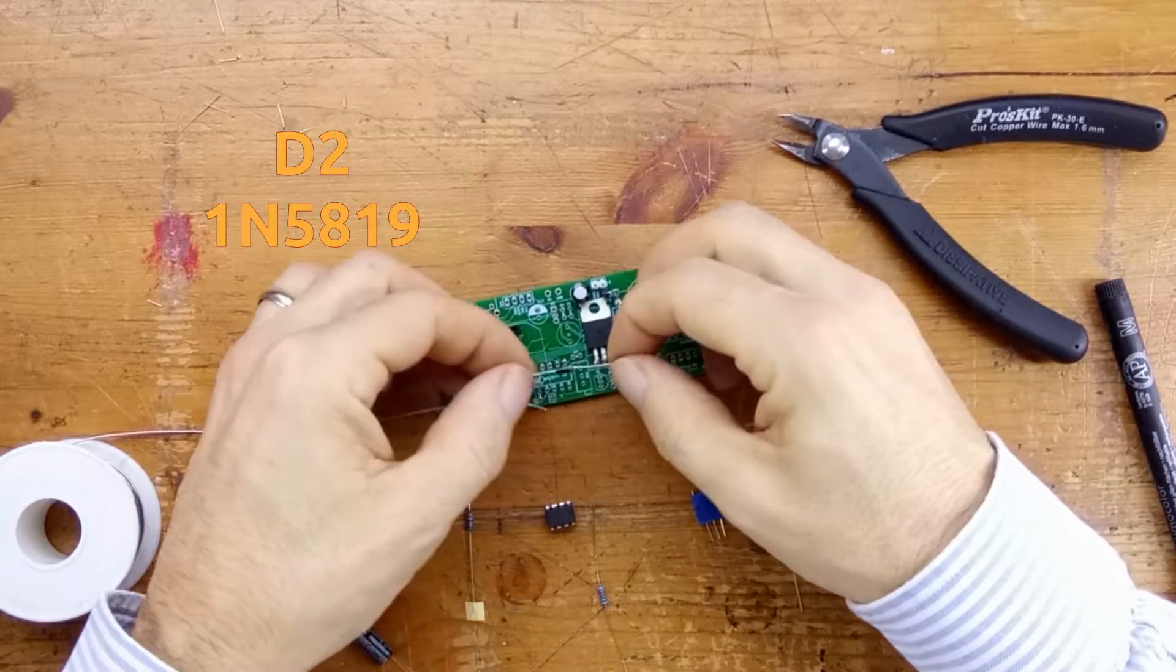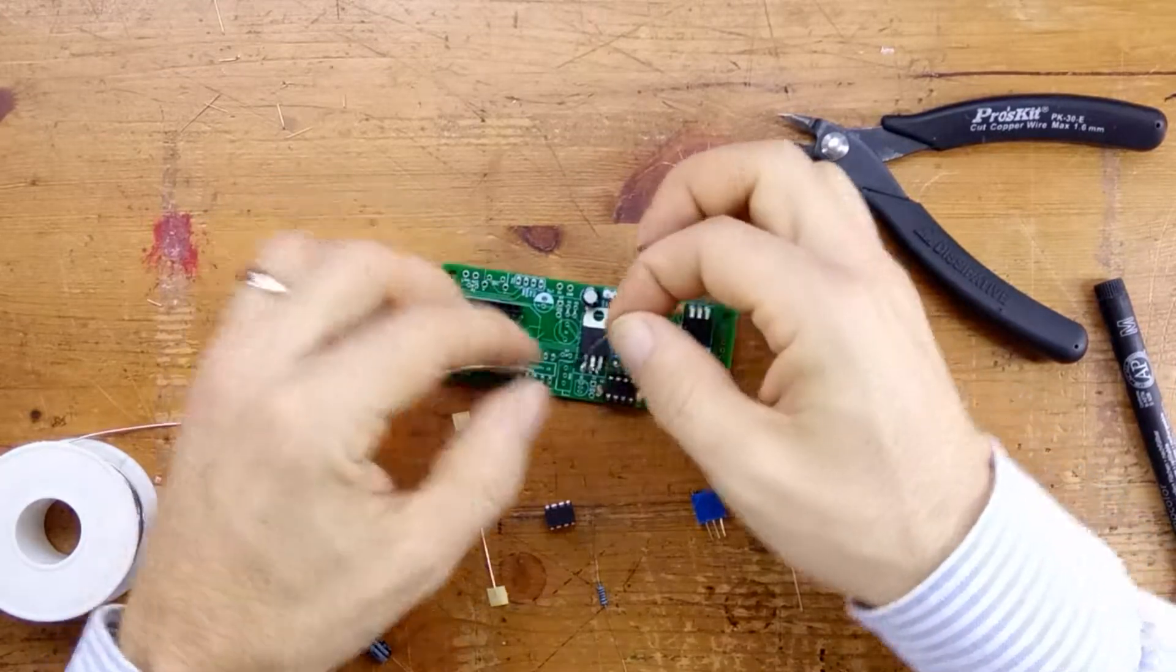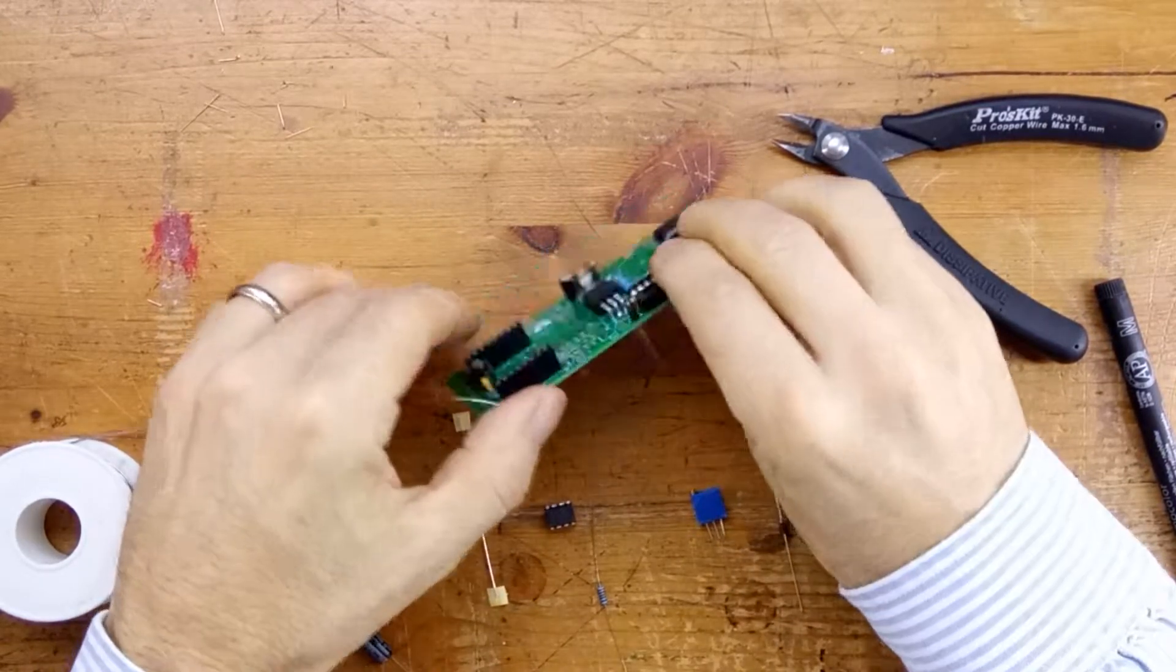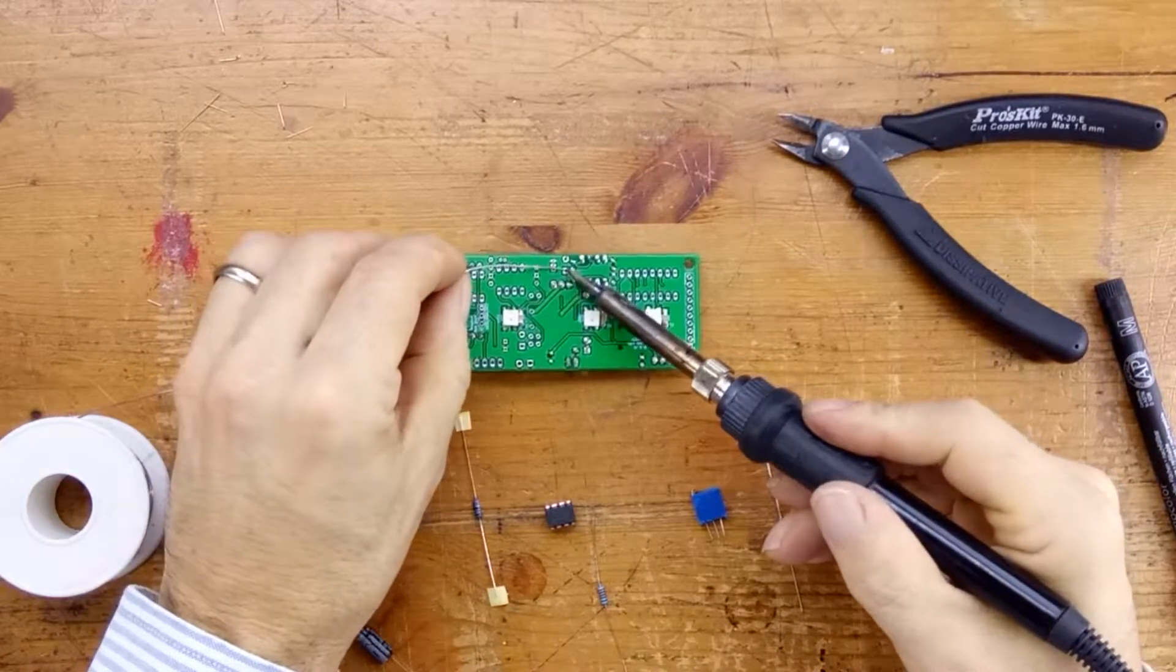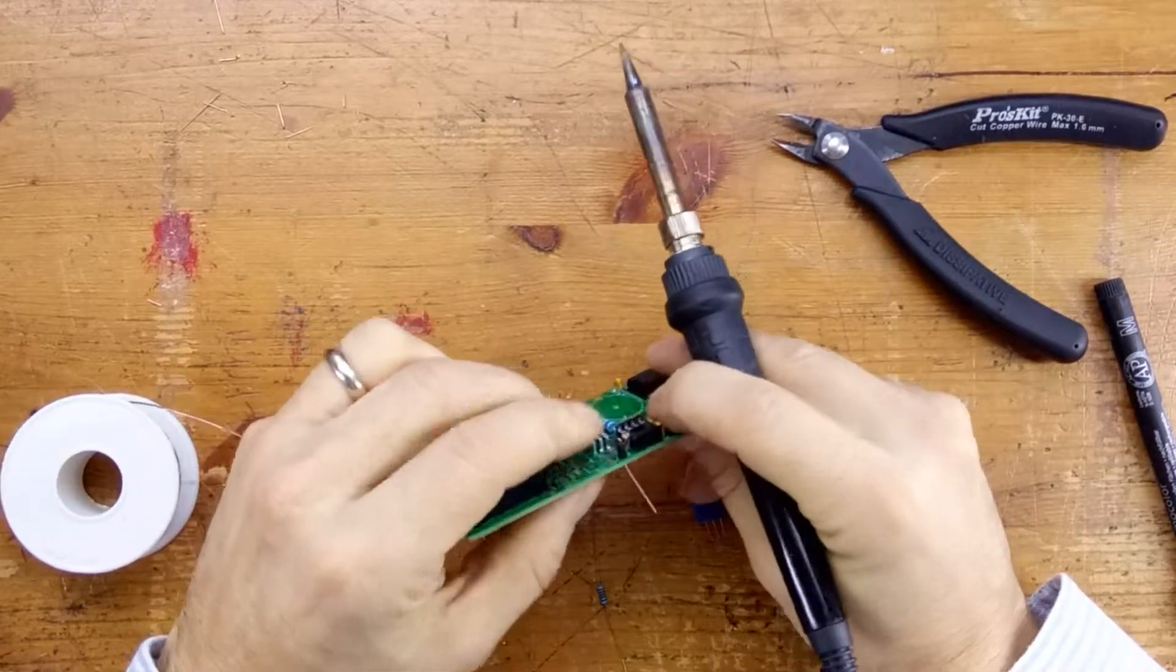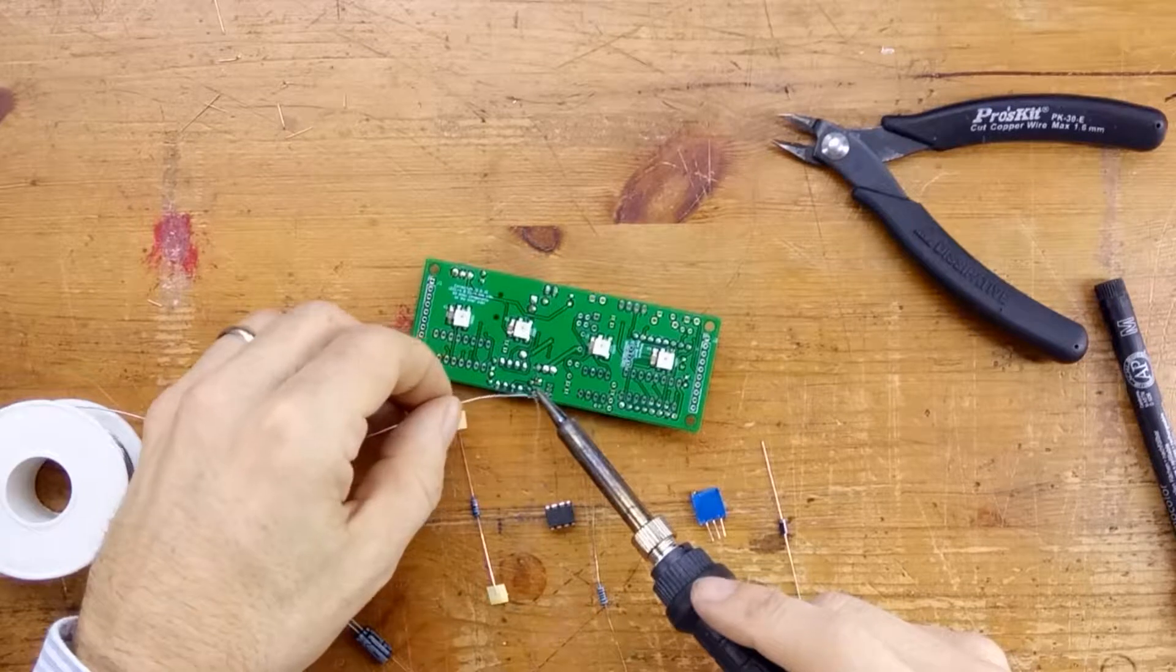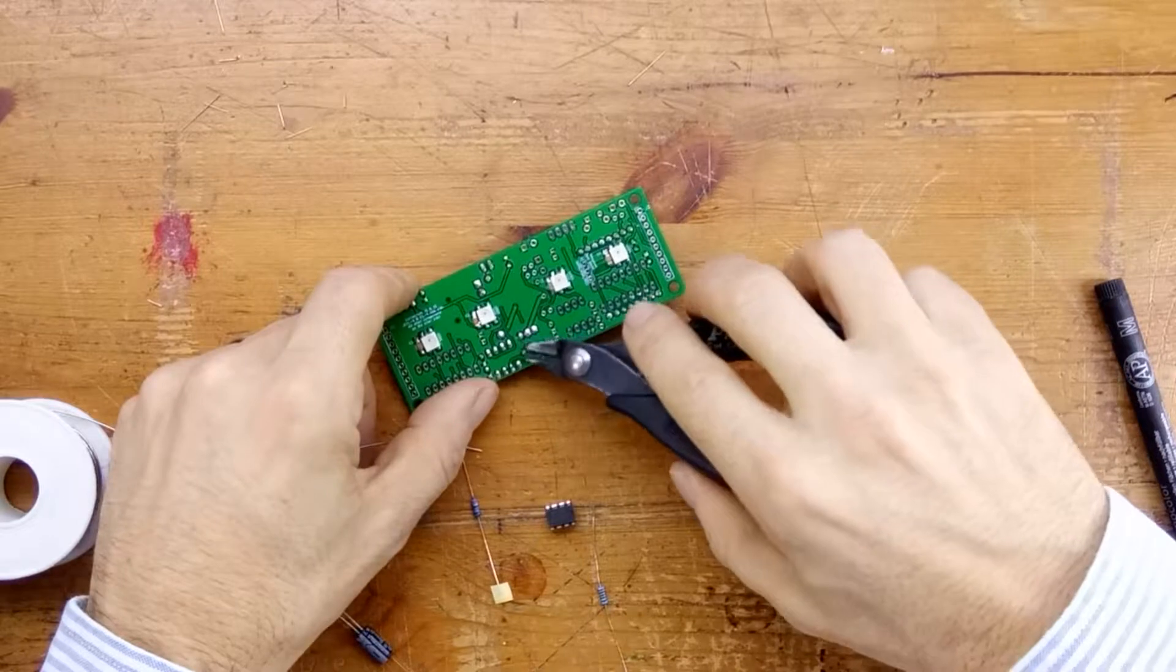Now D2, that's the 1N5819. It's got a white stripe on it, and the white stripe goes into the pad with the square shape on it. Make sure that you get the 1N5819 and not the UF4007. Now, the UF4007 comes later, so read the writing on this one, which is 1N5819, and make sure that the white stripe goes into the hole with the square profile. Trim up.